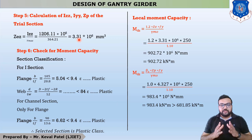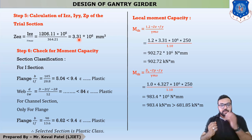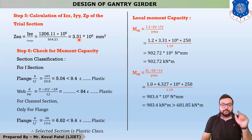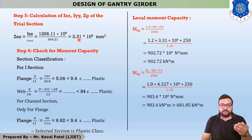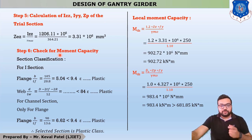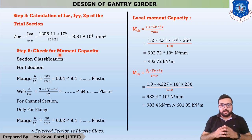Now we have to check whether our selected section can resist the maximum shear force and maximum bending moment. If the selected section fails to restrain the maximum bending moment of 681.85 kNm and the maximum shear force of 471.83 kN found in step 3, then we have to try another section. Let us start step 6, which is the check for moment capacity. But before checking moment capacity, we first need to determine which class our selected section falls into.